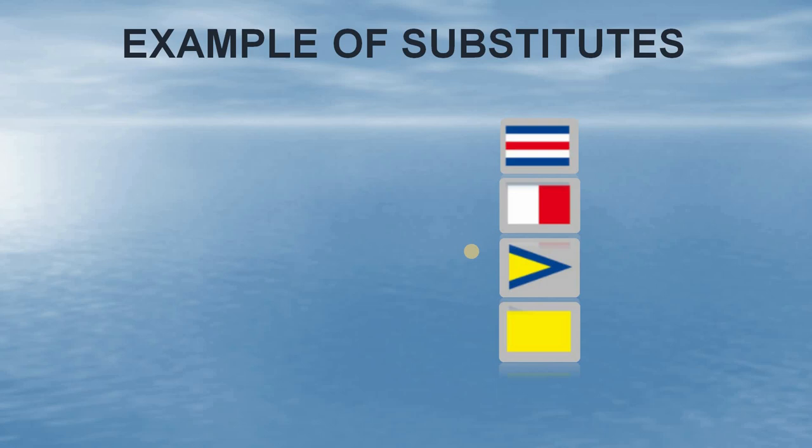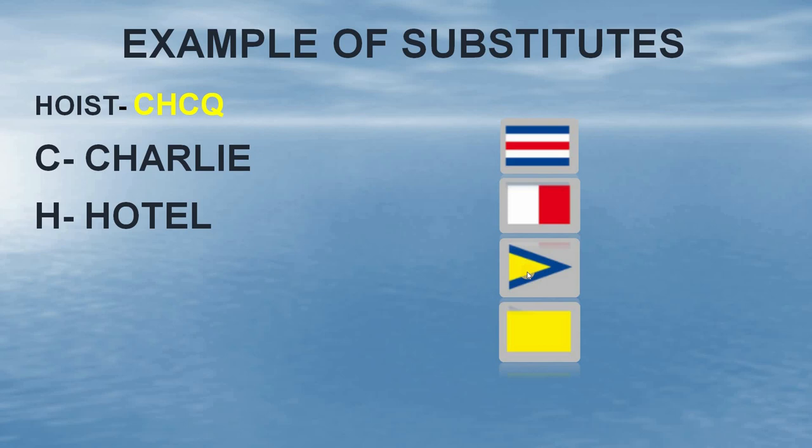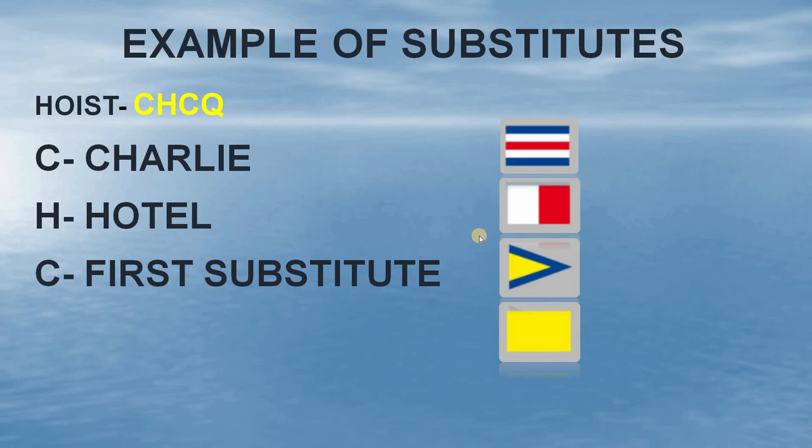In this example, the hoist is of Charlie Hotel Charlie Cubic. Since the Charlie flag is to be repeated, we'll make use of the substitutes. This is the Charlie flag, followed by the Hotel flag, and now we again have to hoist the Charlie flag. But since we don't have another Charlie flag on board, we'll make use of the substitute. Since the Charlie flag is the first flag in the hoist, we will use the first substitute, and then finally hoist the Cubic flag.